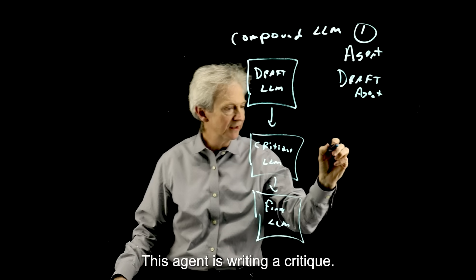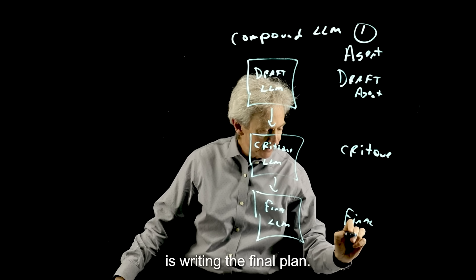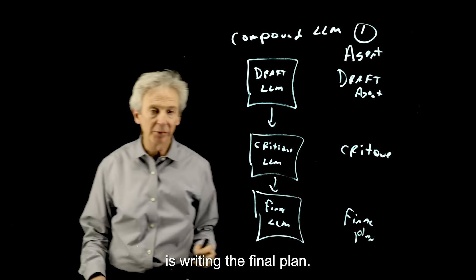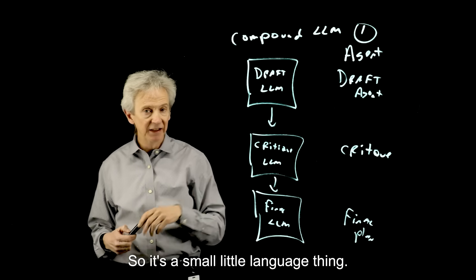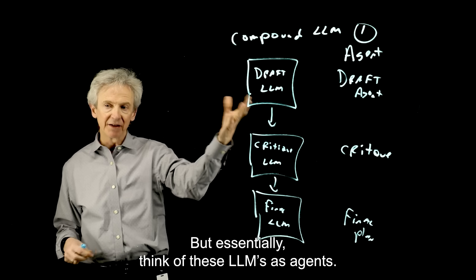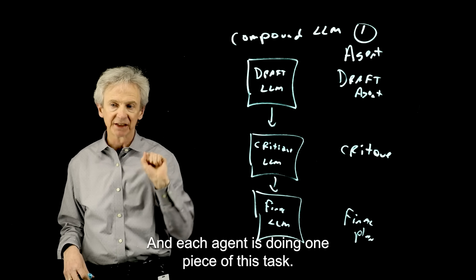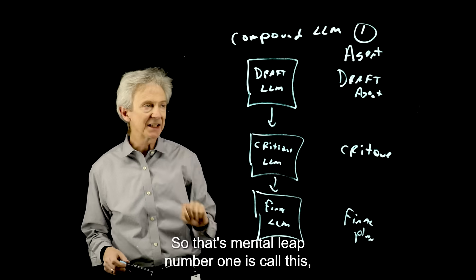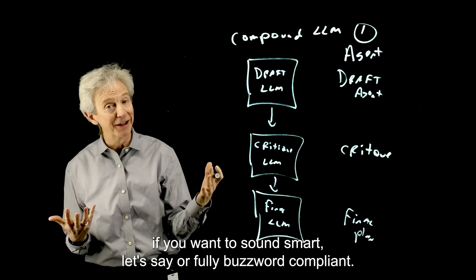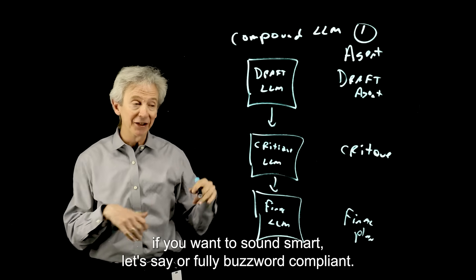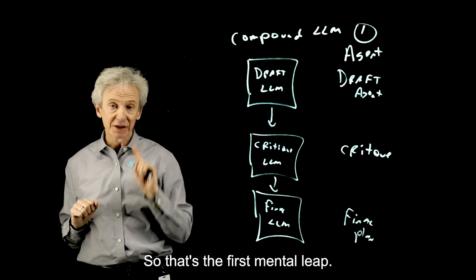This agent is writing a critique. And this agent is writing the final plan. So it's a small little language thing. But essentially, think of these LLMs as agents. And each agent is doing one piece of this task. Okay, so that's mental leap number one, is call these, if you want to sound smart, let's say, or fully buzzword compliant, you can call these things agents instead of LLMs.